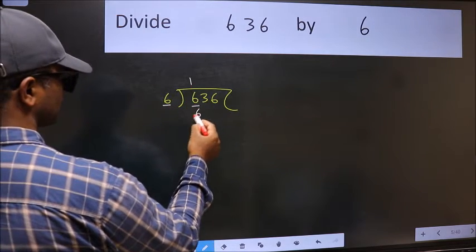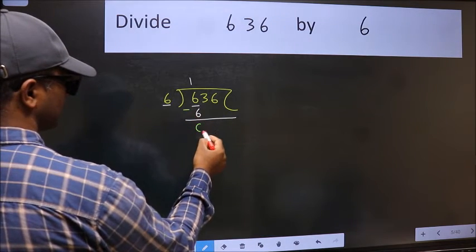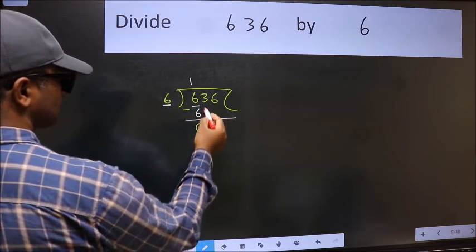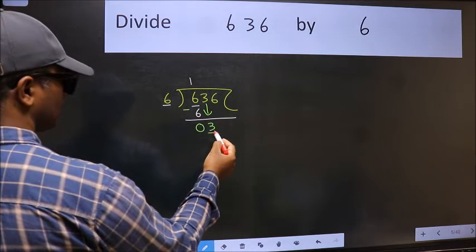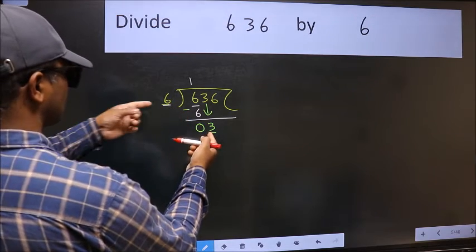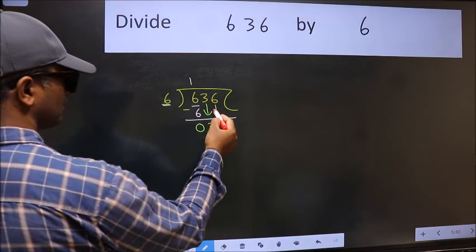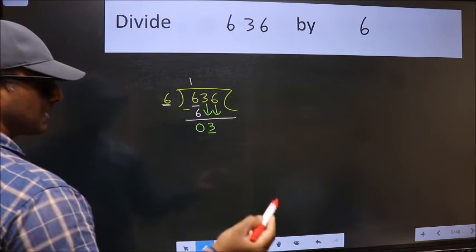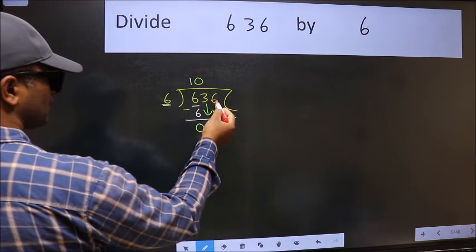Now we should subtract. We get zero. After this, bring down the beside number, so 3 down. Now here we have 3 and 6 here. Three is smaller than 6, so we should bring down the second number. And the rule to bring down the second number is we should put zero here. Then only we can bring this number down.